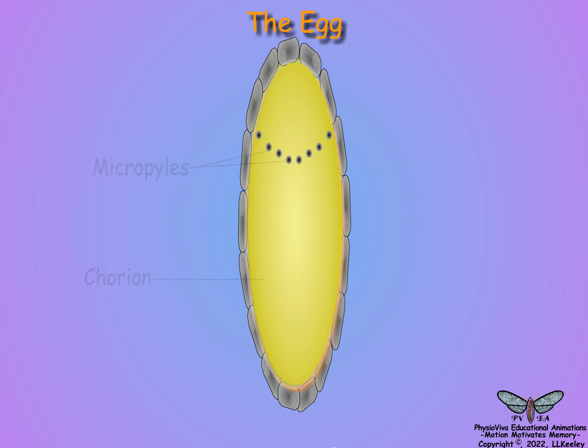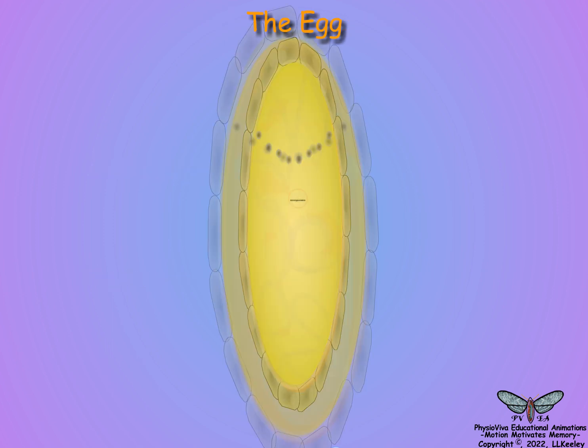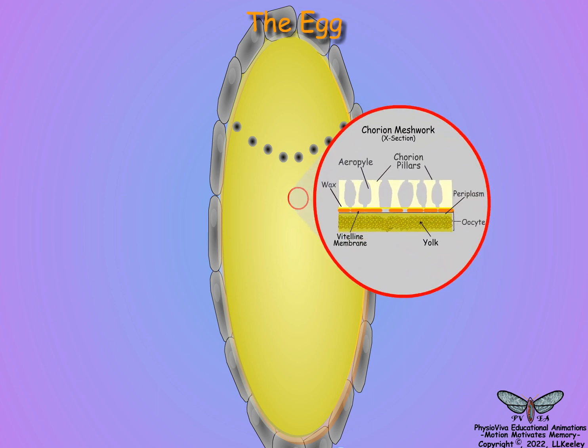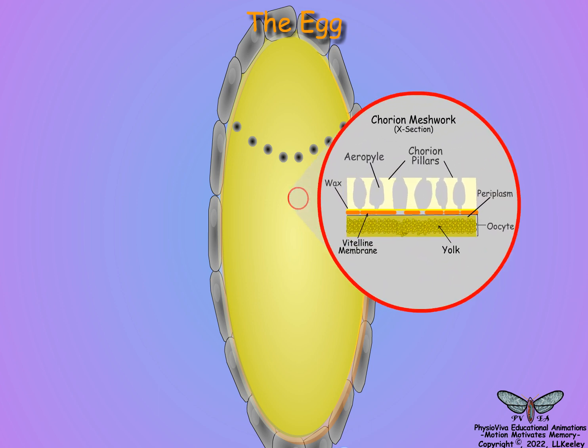However, unlike the cuticle, the chorion does not contain chitin. The chorion is divided into inner and outer layers, held together by a pillared meshwork of struts. The meshwork connects to the outside through spaces called aeropyles, that form a layer of air trapped over the egg surface for respiration.